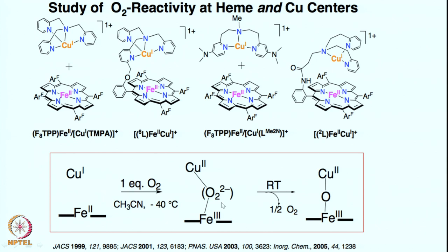This is quite exciting because we can reliably obtain an intermediate relevant to cytochrome C oxidase. These species are not very stable intermediates — they can form oxo-bridged species depending on the ligand on the copper center, which can be linear or bent. A series of systematic studies has clearly shown that a one-to-one mixture gives this peroxo intermediate, which is quite an exciting starting point.